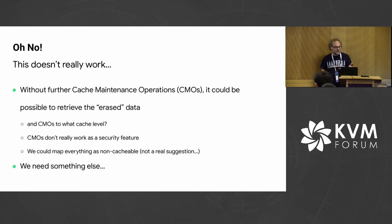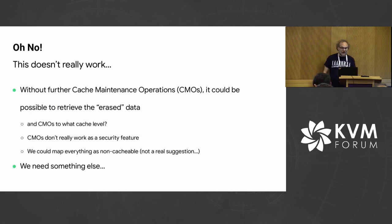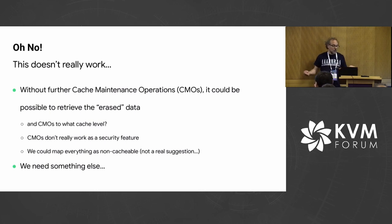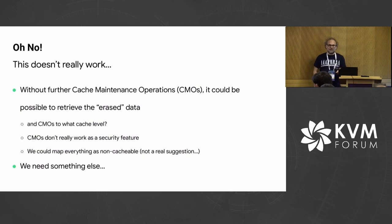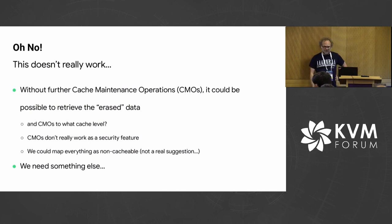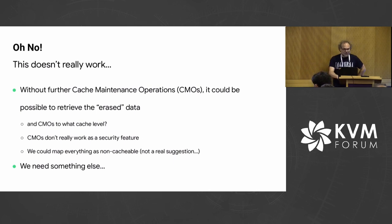And then there are some ARM-specific considerations. Without cache maintenance operations, you can actually retrieve the data. We need a simple cache mapping. If you perform cache maintenance operations — to what level? We have multiple levels in the ARM architecture. You can flush to any of these levels, and if you spy data at the level below, you could retrieve the data there. So that doesn't work as a security feature. We could map everything as non-cacheable — but that's not an actual suggestion.